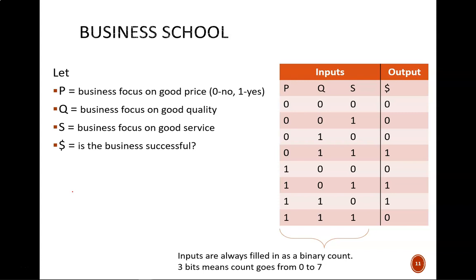Here we see my version of the truth table. But the table itself means nothing without the variable definitions. I decided to let P represent whether or not the business focuses on having a good price. A zero would mean no it doesn't, and a one would mean yes it does. I define the other inputs similarly. And for the output variable, a dollar sign, a one would represent that the business is successful. Then I build the table starting with labeling the inputs and outputs section. Under these, I write the individual variable names.